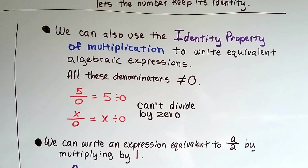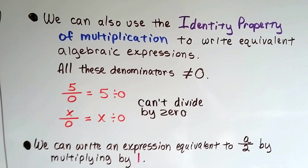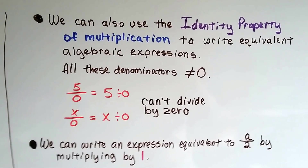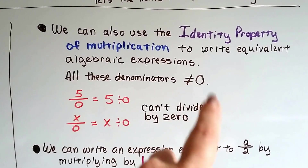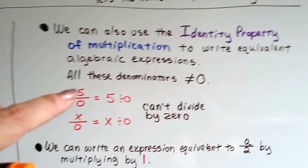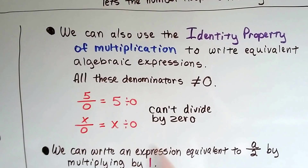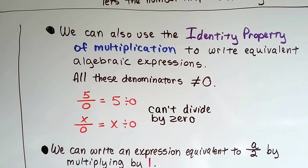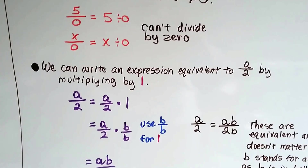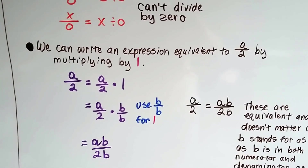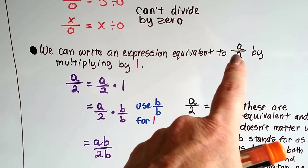We can also use the identity property of multiplication to write equivalent algebraic expressions, as long as the denominators are not equal to 0. Remember, the equal sign with a slash through it means not equal to. So if we had 5 over 0, that would be 5 divided by 0. And if we had x over 0, that would be x divided by 0 — and you can't divide by 0. Try it on your calculator; it won't let you.